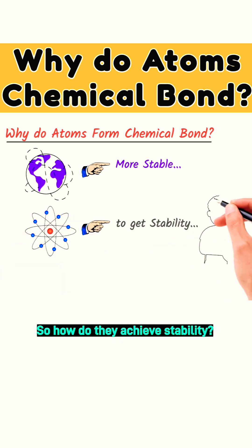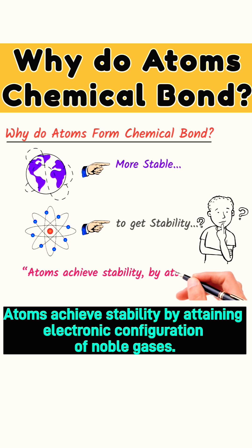So how do they achieve stability? Atoms achieve stability by attaining the electronic configuration of noble gases.